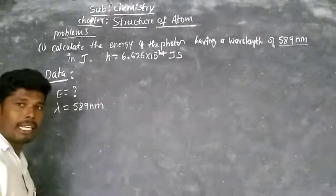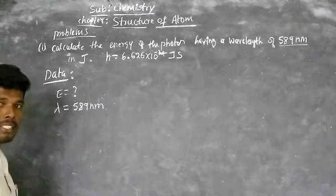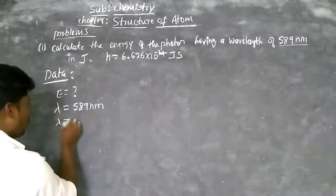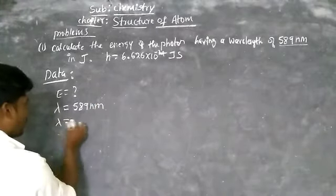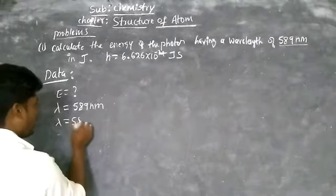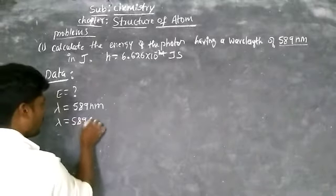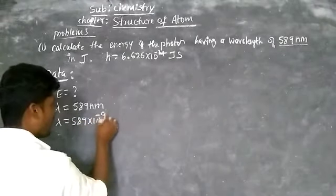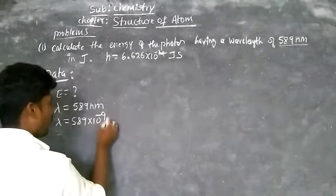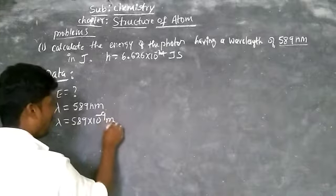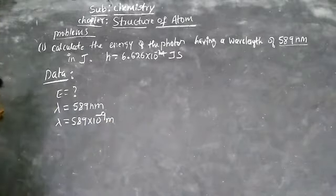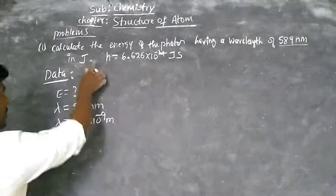Nano is nothing but 10 to the power minus 9, so convert it into meters. That is 589 × 10⁻⁹ meters. We are converting nanometers into meters.